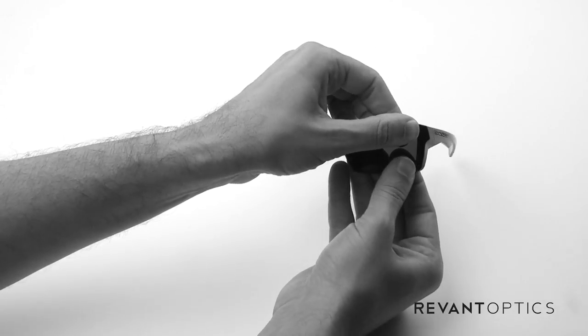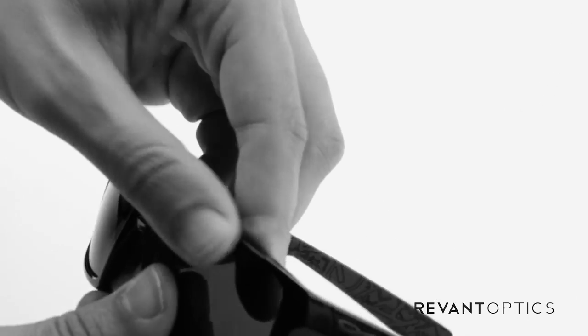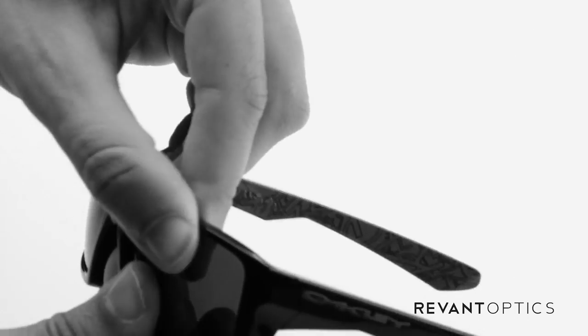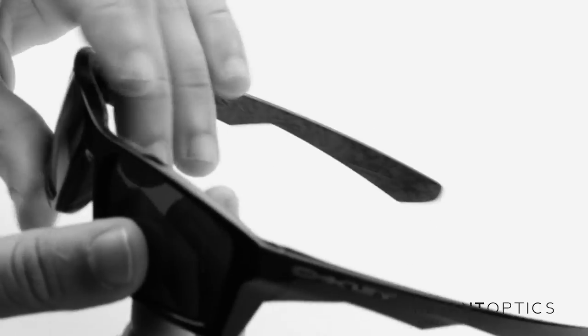Seat the outside edge in the frame like that, slide it in there and then use your thumbs to push on the inside edge and pop it into place. Now both those lenses are nice and secure.